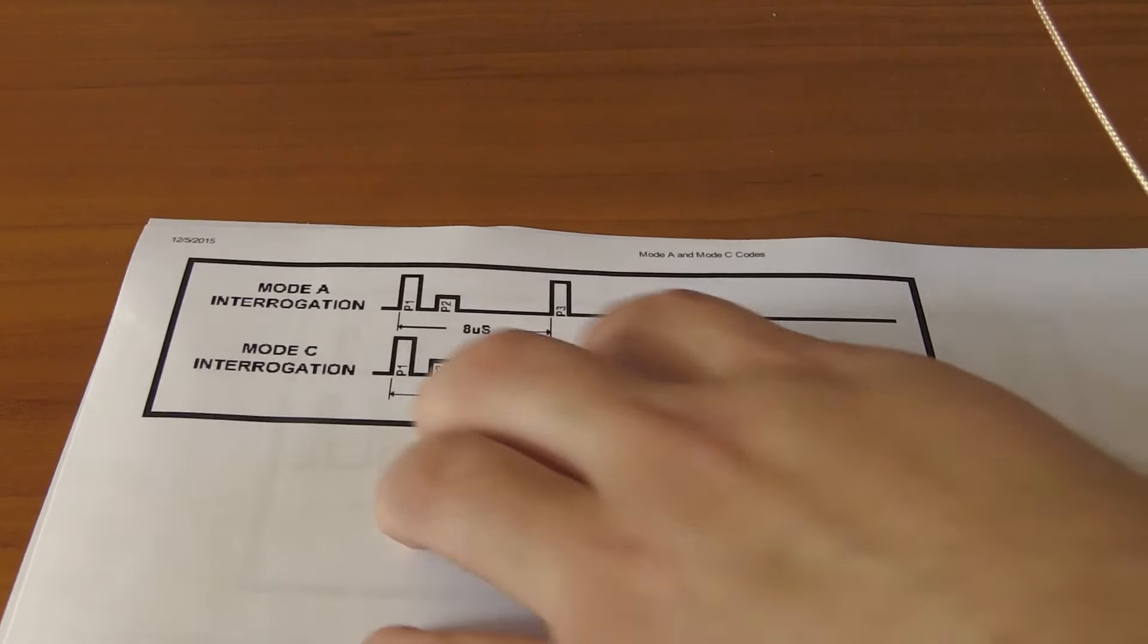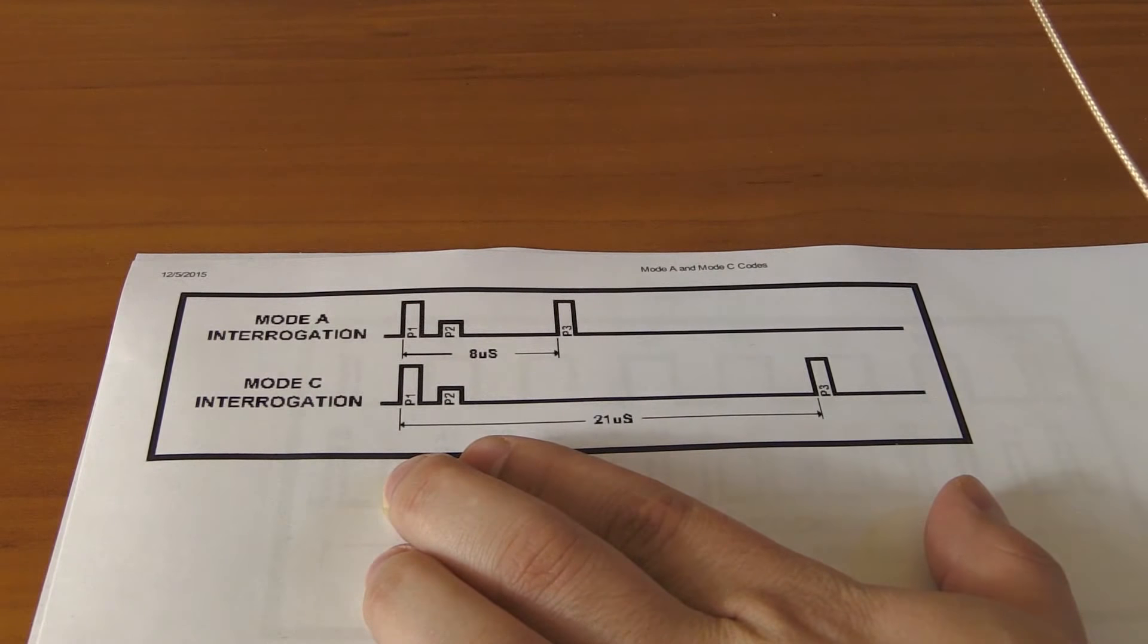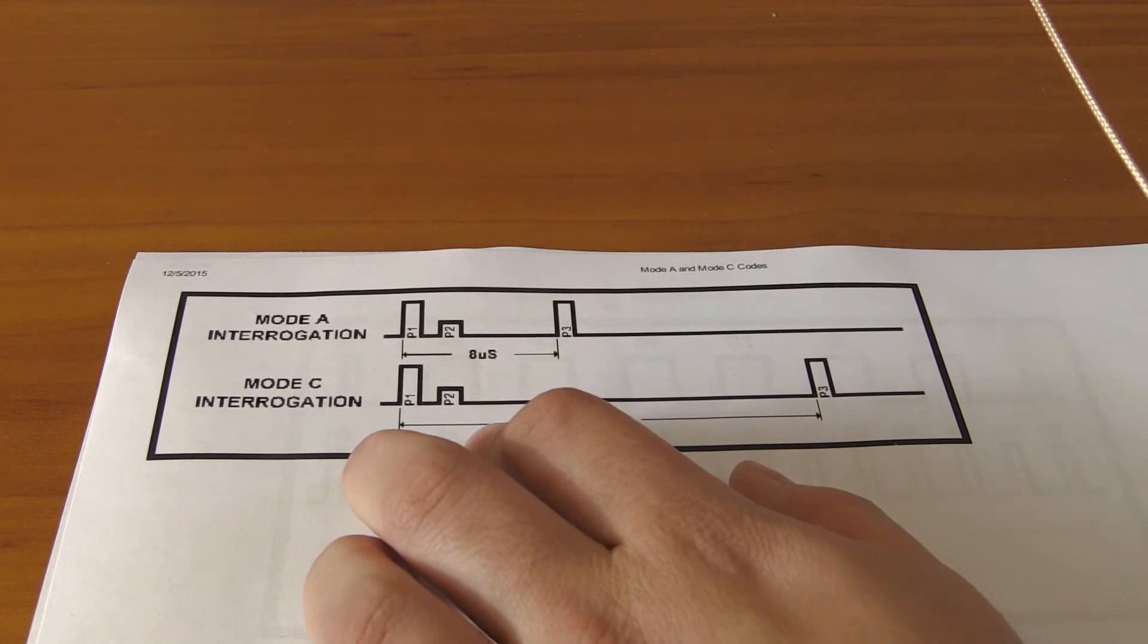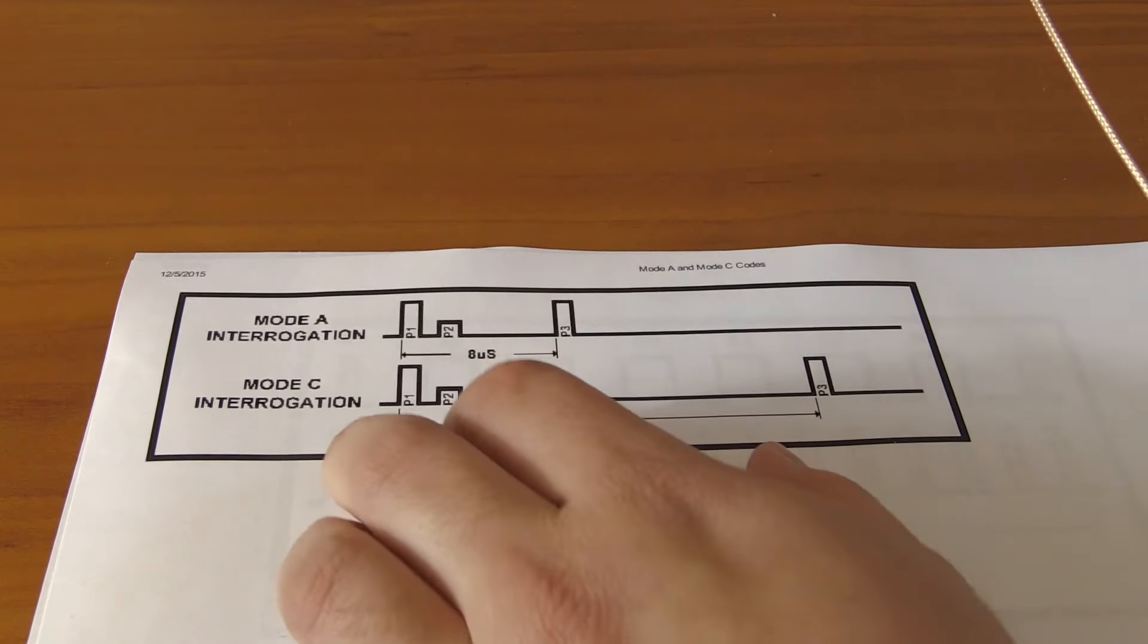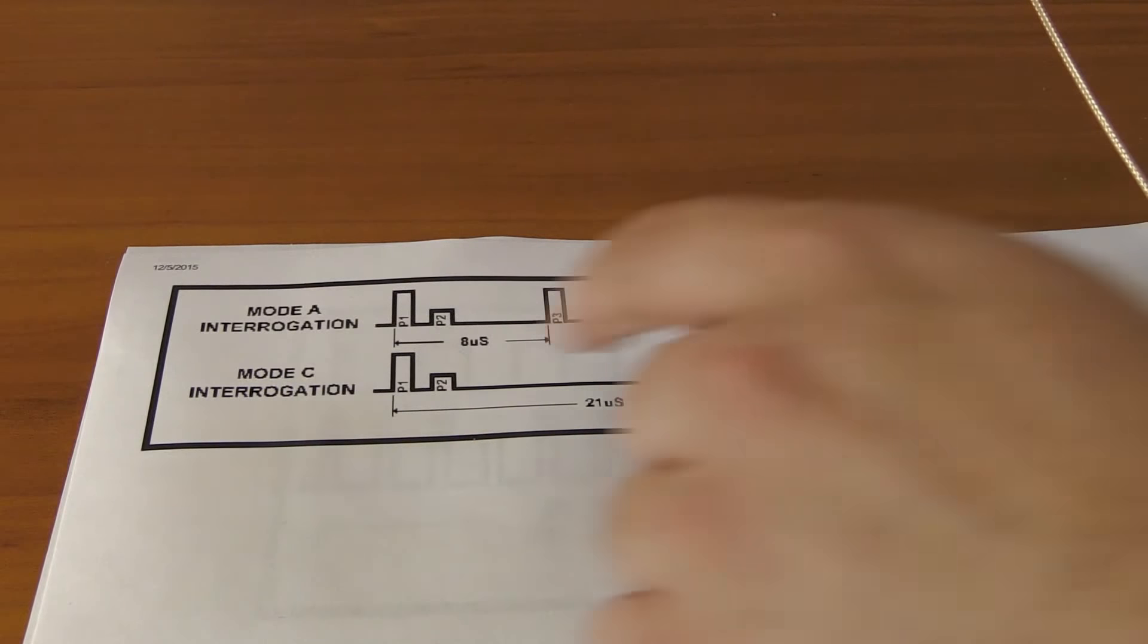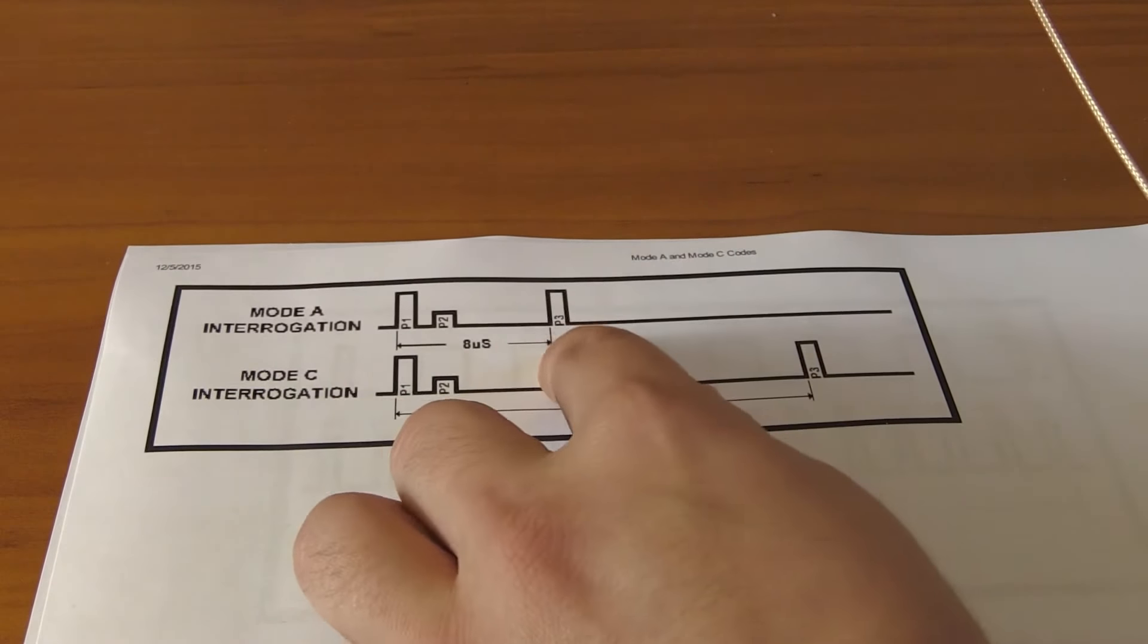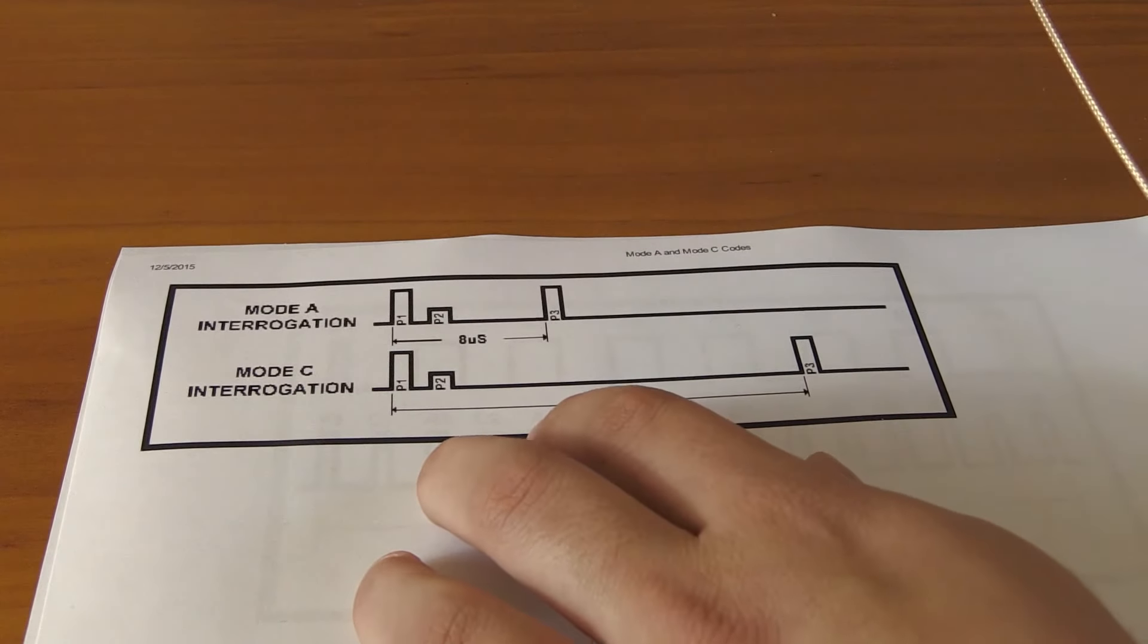So, this is the pulse shape of the signal that is sent for the interrogation types. It is sent on 1030 megahertz, and this P2 here is very important for something we're going to get at in a second. But for the transponder to determine whether it responds with that four-digit number in mode A, or with its altitude in mode C, only depends on the distance from pulse 1 to pulse 3. So if the radar wants to interrogate that four-digit number, it'll send pulses spaced at 8 microseconds. If it wants the altitude, it'll do it at 21 microseconds.